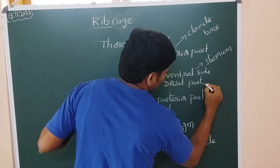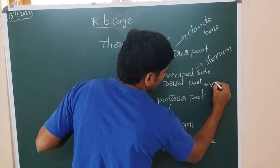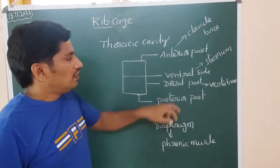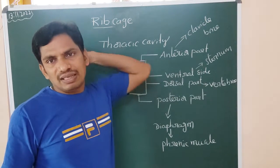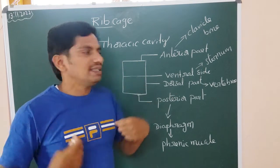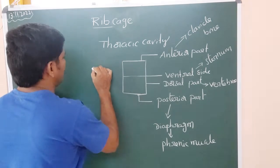Which occupy the vertebrae. Vertebrae are there. This vertebrae, it covers the ventral side, sternum is the lateral side and lateral side, which are the ribs.